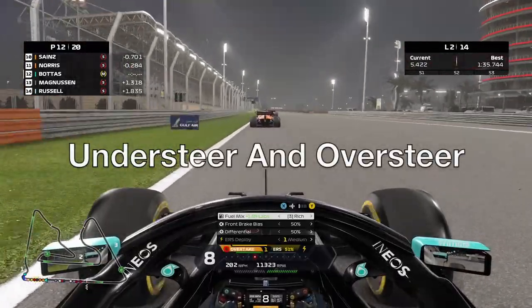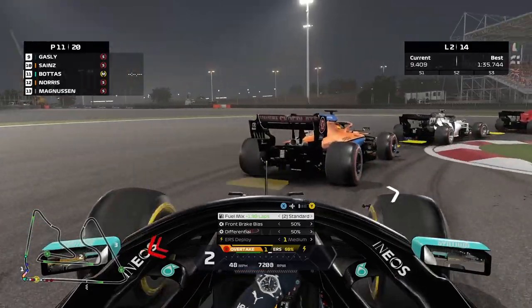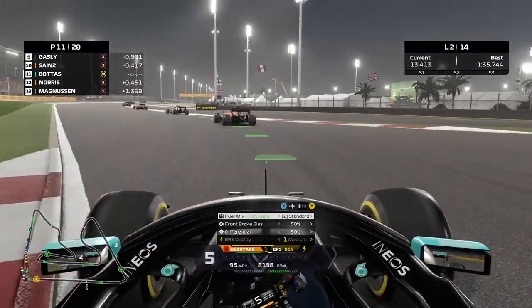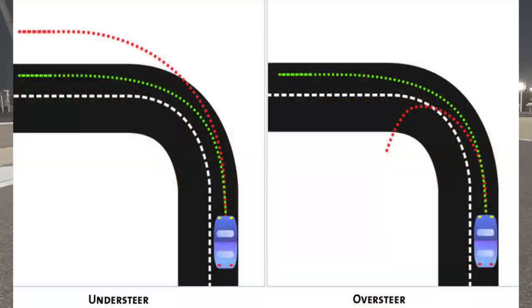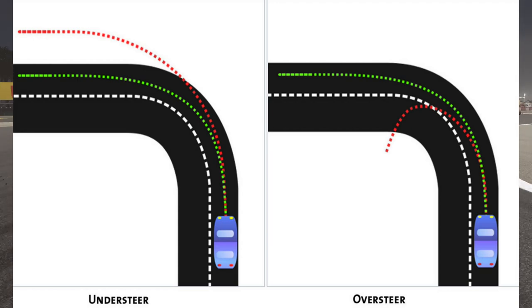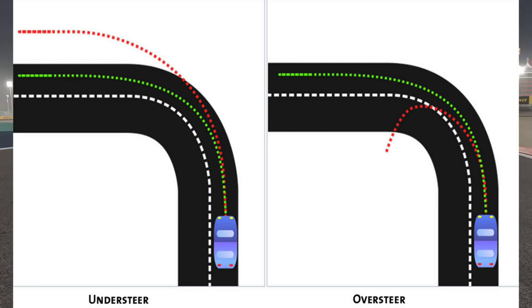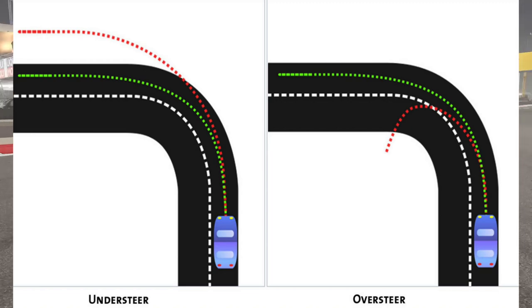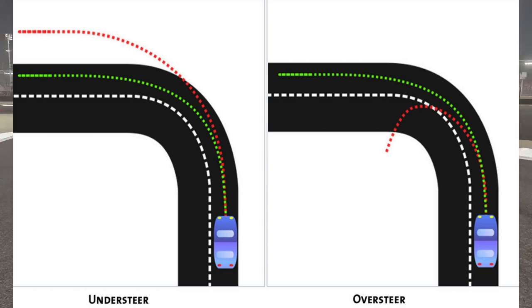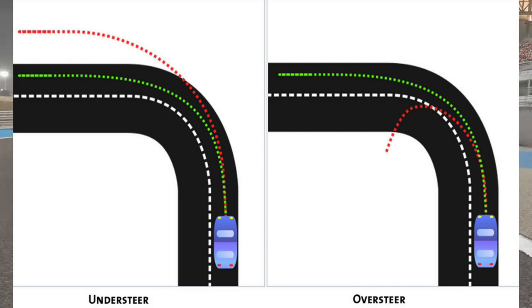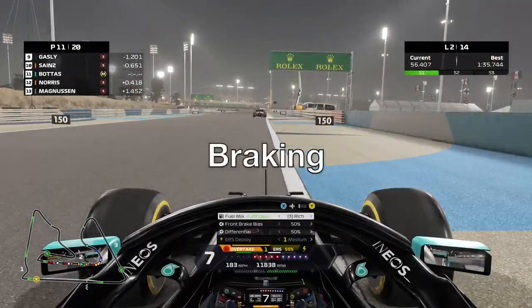Moving on to understeer and oversteer. Understeer is an imbalance between the grip of the front tires and the rear tires. It occurs when the car is not turning as much as intended by your steering input, caused by a lack of grip in the front tires — specifically, the front tires exceeding the grip limit whilst the rear tires are still within it. Oversteer is the opposite: a lack of grip in the rear tires, caused by the rear tires exceeding the grip limit whilst the front tires remain within it.